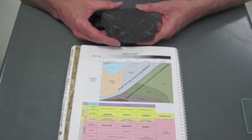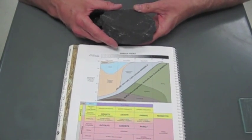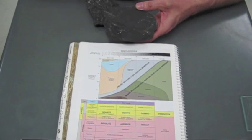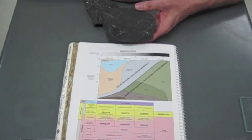So this is an igneous rock called basalt, and I recognize it as basalt, first off, because it's mafic, it's very dark in color, so that pushes me over here on the color index.